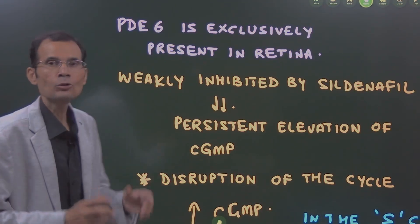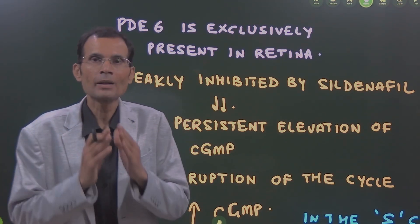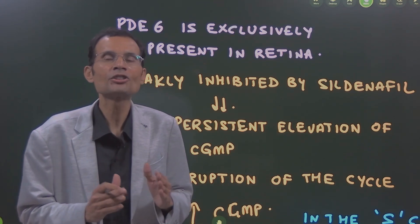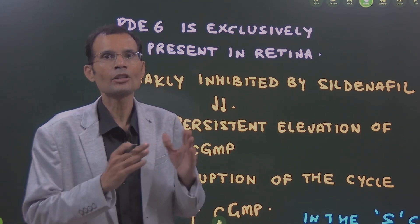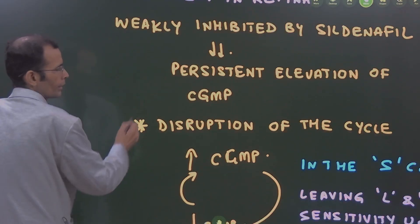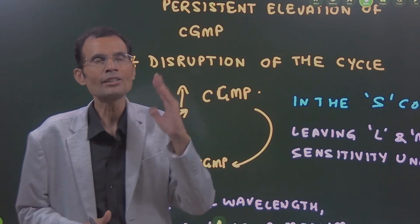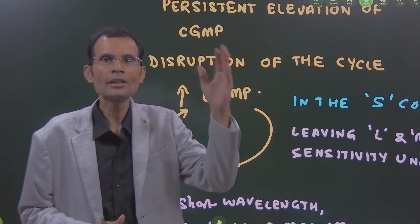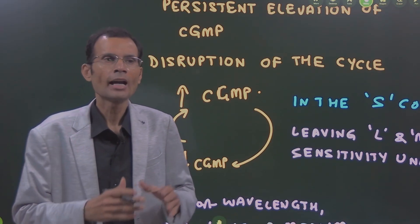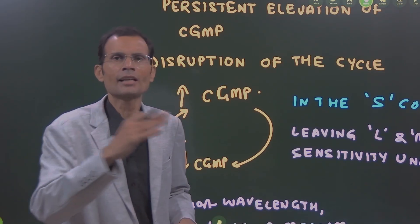This is what happens in the cones. There will be persistent elevation of cyclic GMP levels inside the cones. Normally, when light strikes a cone, cyclic GMP levels decrease and then are quickly resynthesized and replenished.